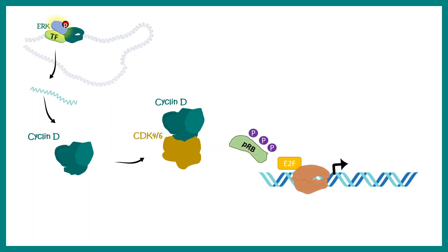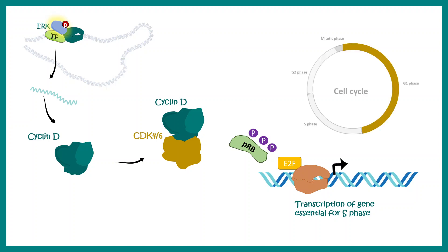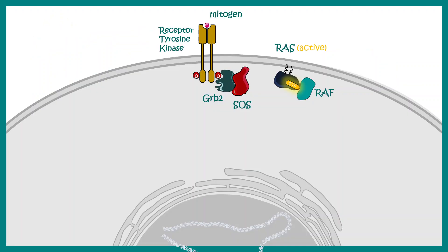E2F can now freely bind to specific gene regions and lead to the transcription of genes responsible for the S phase of the cell cycle. This explains how cyclin D production helps in the progression of the cell cycle from G1 to S, and explains the growth activity of the MAP kinase pathway.